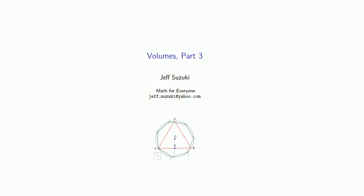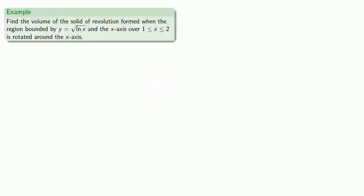Let's take another look at a volume of a solid of revolution. Find the volume of the solid of revolution formed when the region bounded by y equals square root of ln x and the x-axis over 1 ≤ x ≤ 2 is rotated around the x-axis.